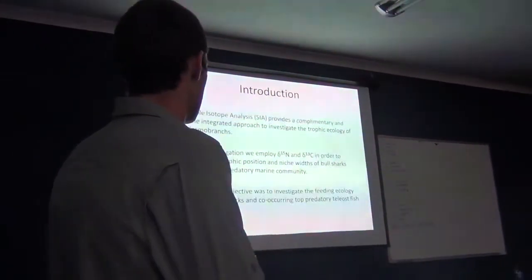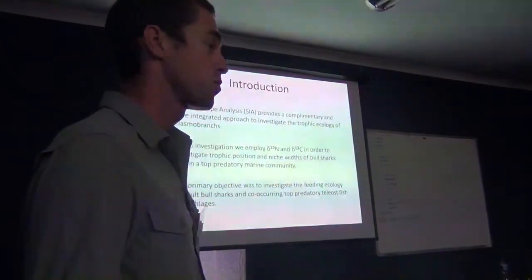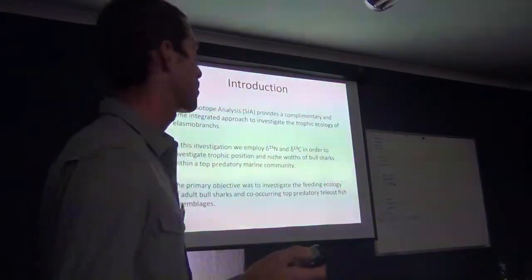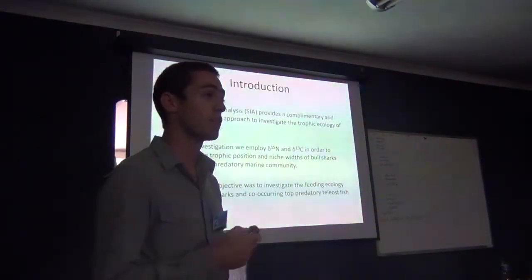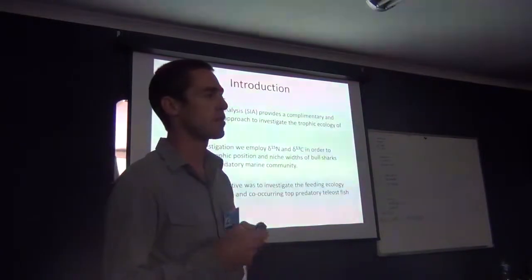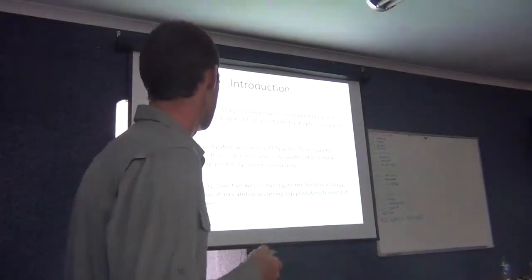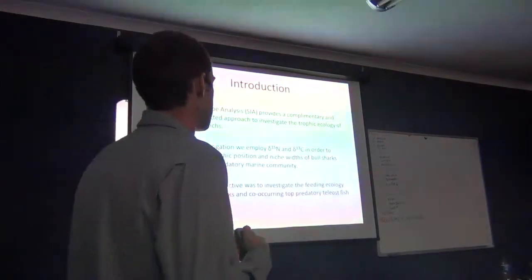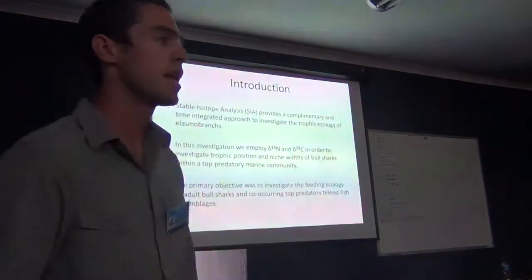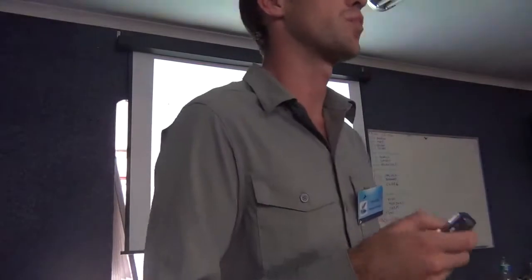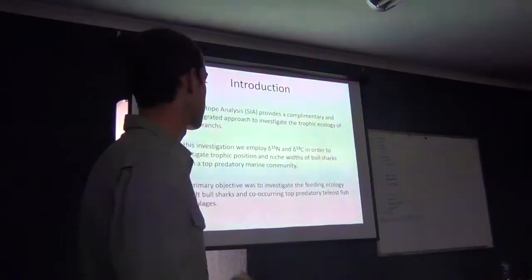We use carbon-nitrogen stable isotopes as previously mentioned. Just to recap: the nitrogen isotope gives us an idea of trophic level, and the carbon isotope gives us an idea of dietary sources. Essentially, as previously mentioned, it gives us an idea of assimilated dietary items over time, as opposed to the snapshot nature you obtain from stomach content analysis.